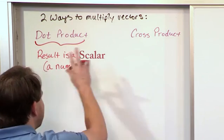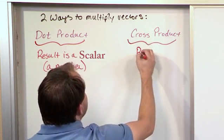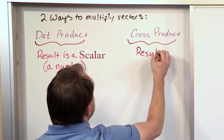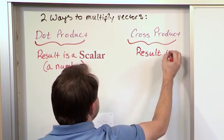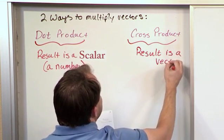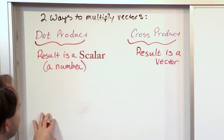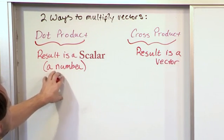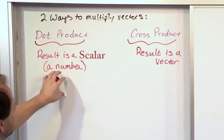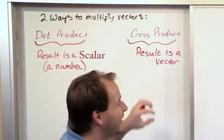Just for comparison, when you cross two vectors — which we will talk about later — the result is a vector, another vector. So that's the main difference: when I dot two vectors together I just get a number back, like four or six or eight. If I cross two vectors, I actually get another vector.